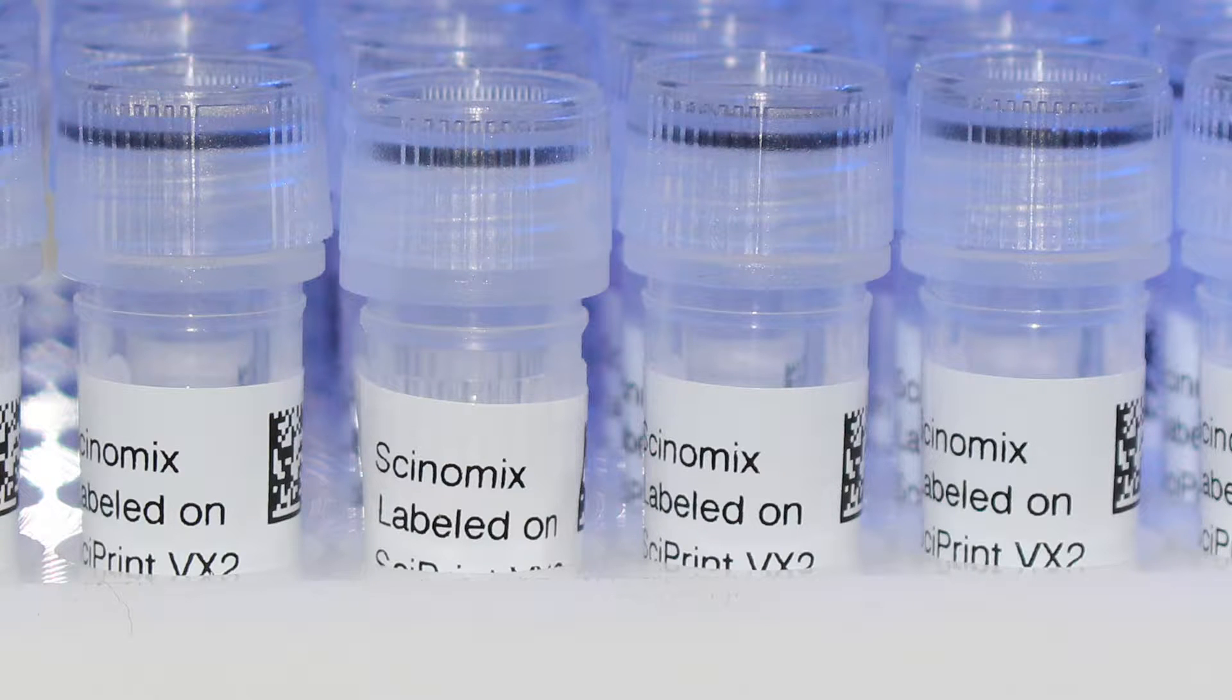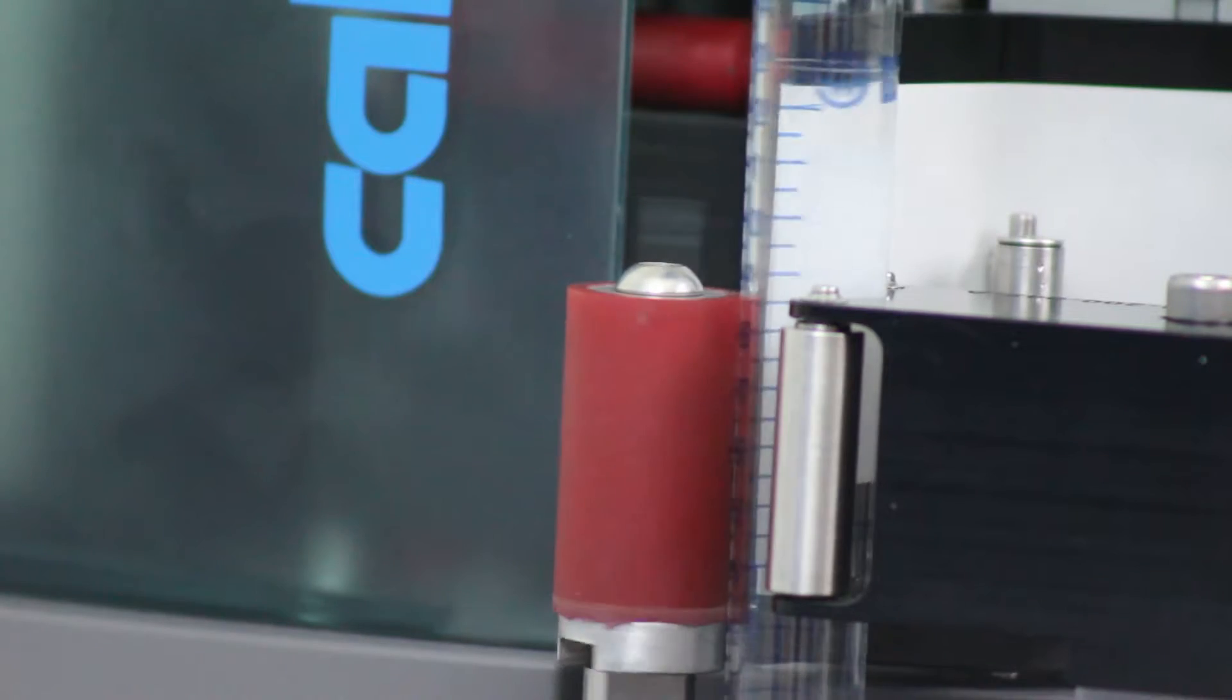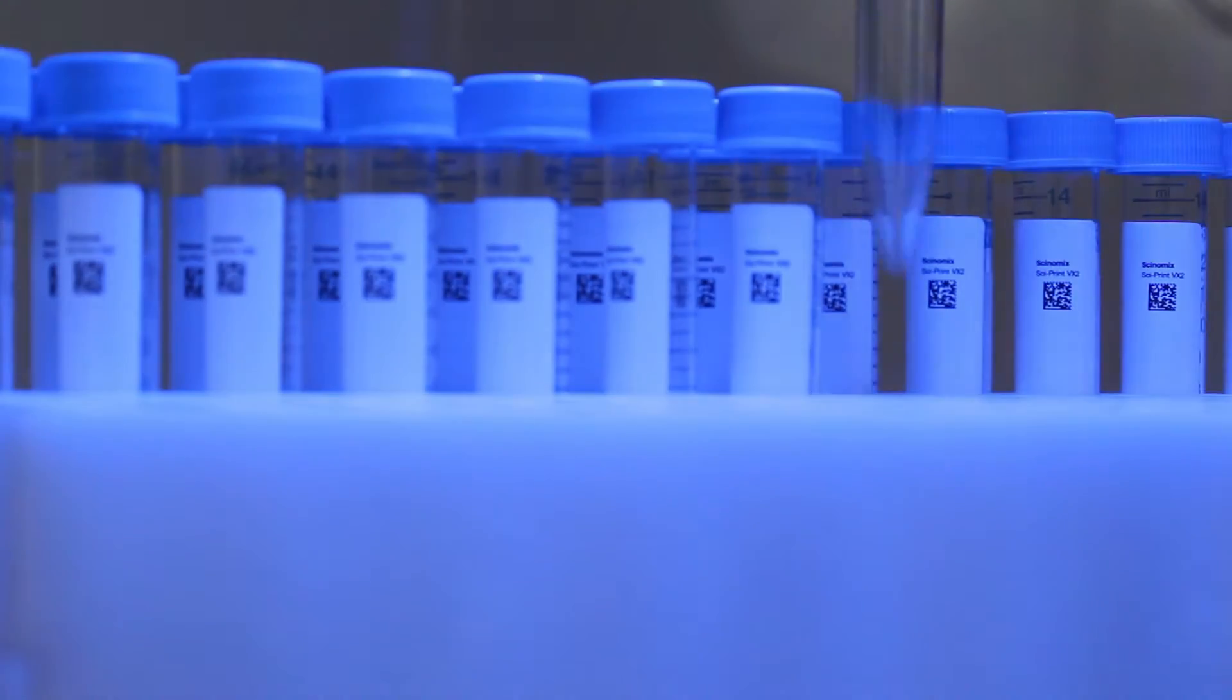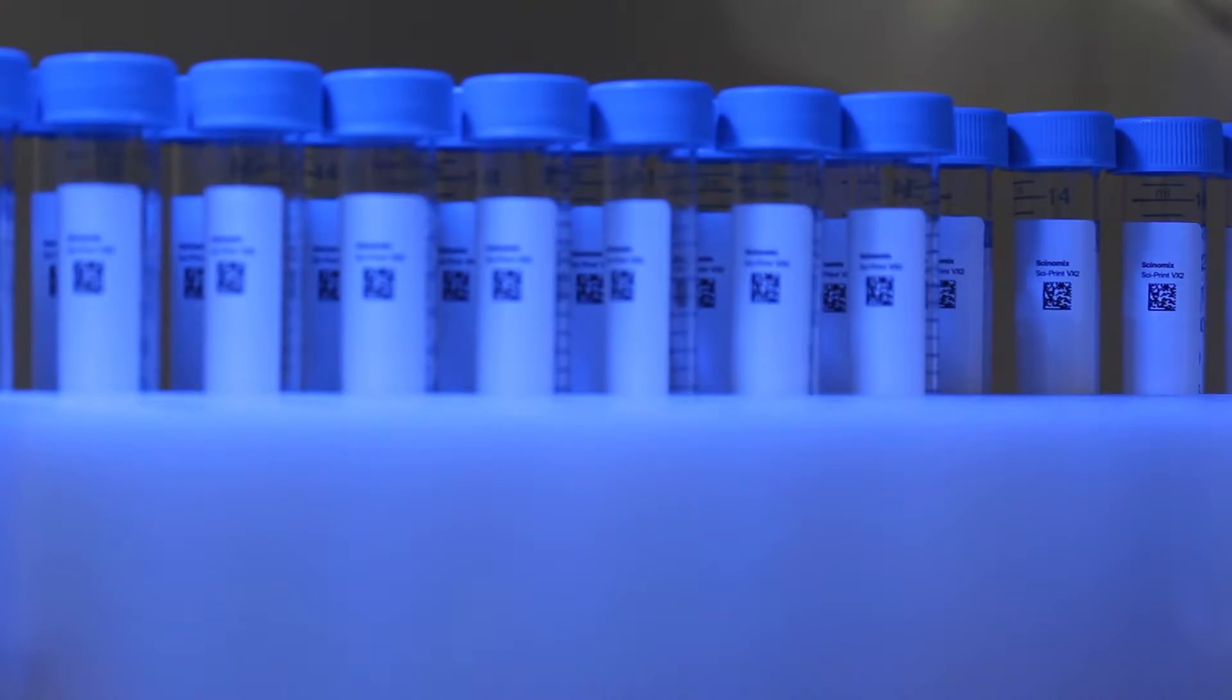Synomics offers many accessories to better optimize your tube labeling. The SciPrint VX series comes with several different label options to help customers achieve individual needs for chemical compatibility, size, and temperatures ranging from negative 196 degrees C to plus 120 degrees C.